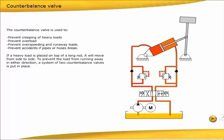If a heavy load is placed on top of a long rod, it will move from side to side. To prevent the load from running away in either direction, a system of two counterbalance valves is put in place.